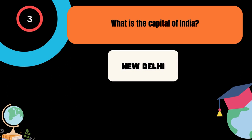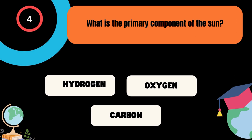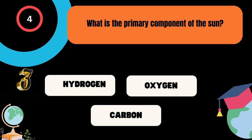What is the primary component of the sun? A. Hydrogen, B. Oxygen, C. Carbon. And the correct answer is Hydrogen.